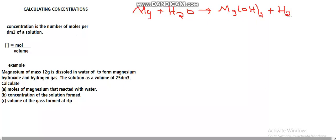Now is this equation balanced? We have one magnesium on each side, four hydrogen atoms — two here and two here — and two oxygen atoms. So if you put a 2 in front of water, the equation becomes balanced.